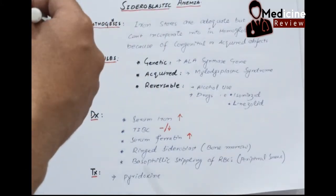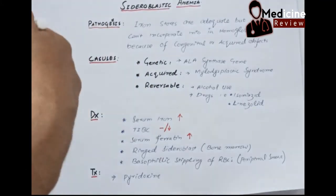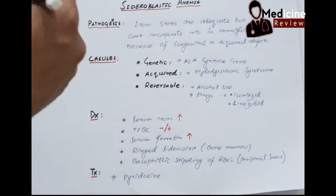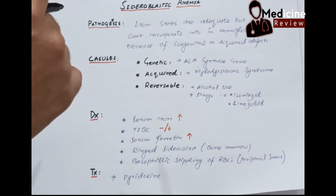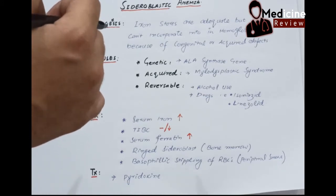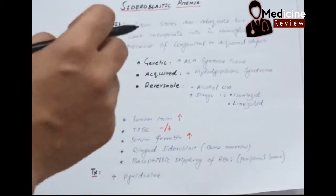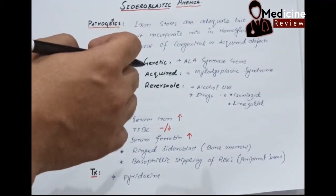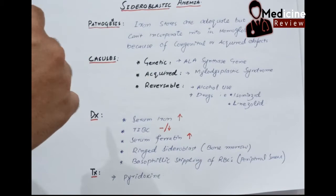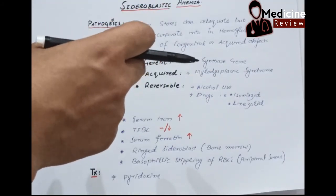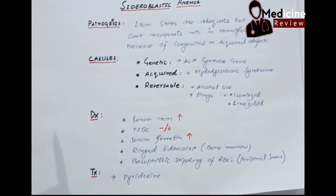This is a separate topic. Someday we will discuss that. Another is reversible conditions, which is important, like alcohol use or drugs like isoniazid or linezolid. These are reversible conditions. They lead to deficiency of B6 vitamin, which is called pyridoxine, and this can lead to sideroblastic anemia.